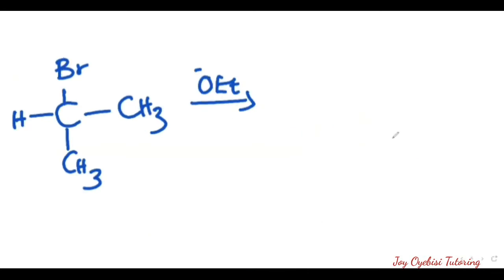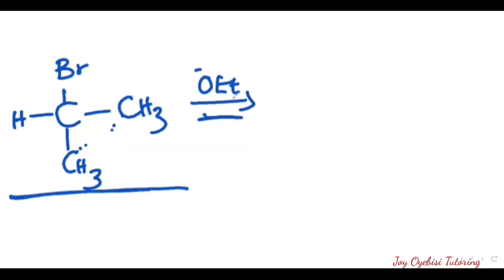In this next example, we are also asked to draw the mechanism. The first thing is to ascertain which mechanism to use — E1 or E2. Looking at this, it is a secondary alkyl halide, which can undergo both E1 and E2 elimination reactions. The next step is to look at the base given: it is negative OEt (ethoxide), which is a strong base that favors E2 reaction mechanism.